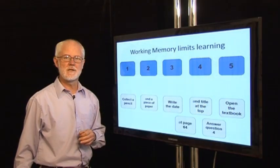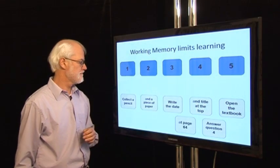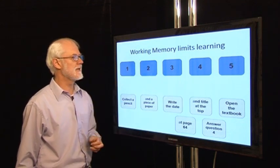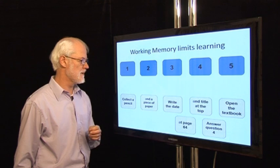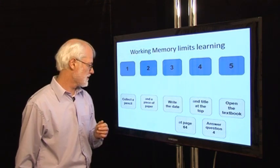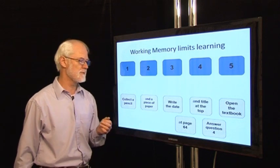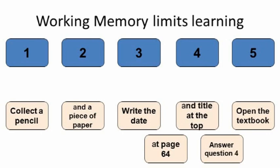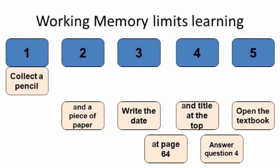Let's look at some of the results of limited working memory. Let's say the pupils come in and this student has five slots in their working memory. And you give them what seems to be a simple instruction. Collect a pencil and a piece of paper, write the date and the title at the top, open the textbook at page 64 and answer question four. They go into the working memory like this.